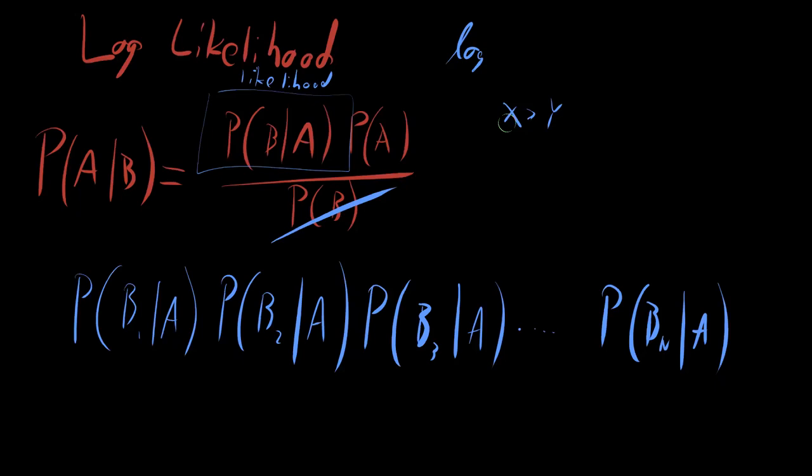The reason is now we can exploit this. We can exploit this property by then taking the log of this set of multiple probabilities, and because it's a log, when you multiply elements inside of a log, it's taking the log and adding them up.